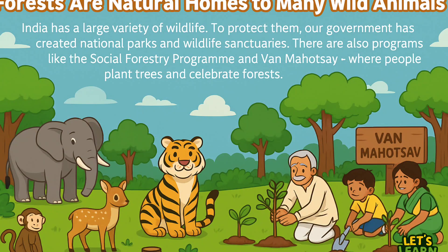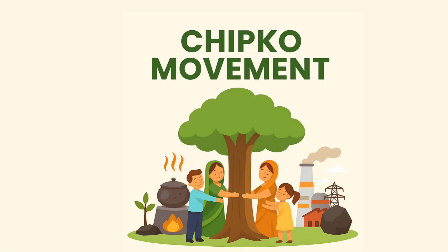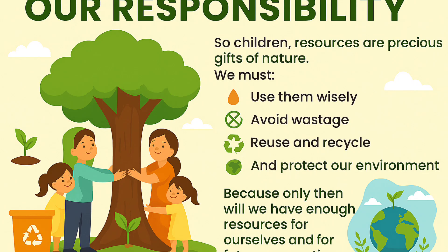Forests are natural homes to many wild animals. India has a large variety of wildlife. To protect them, our government has created national parks and wildlife sanctuaries. There are also programs like the Social Forestry Program and Van Mahotsav, where people plant trees and celebrate forests. Do you know about the Chipko Movement? It started in 1973 in Uttarakhand by Sunderlal Bahuguna. Villagers hugged trees to stop them from being cut down. Isn't that amazing?